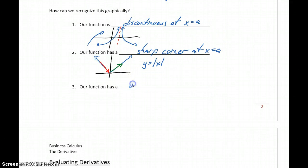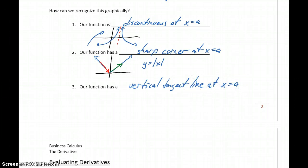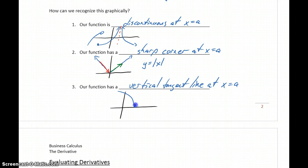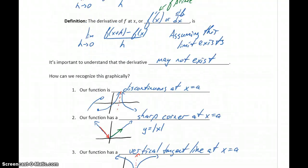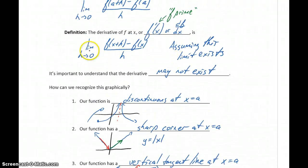The last case is if our function has a vertical tangent line at x equals a. This would be uncommon in this course, but if a function dipped down to a point and then immediately started curving back up, the tangent line at that point would be completely vertical, and a vertical line has an undefined slope, so the derivative would be undefined. So we have a definition for the derivative established — taking the limit of the difference quotient — but we also need to keep in mind there are cases where the derivative is undefined or does not exist.